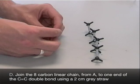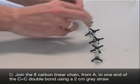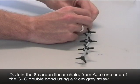Join the eight carbon linear chain from step A to one end of the carbon-carbon double bond using a two centimeter grey straw.